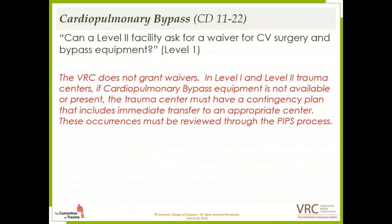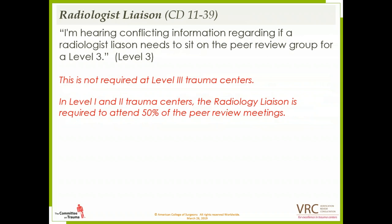On cardiopulmonary bypass: can a level two facility ask for a waiver for CV surgery and bypass equipment? No, the VRC does not grant any waivers for this requirement. The expectation is that in level one and level two trauma centers, if the equipment is not available, the trauma center must have a contingency plan that includes immediate transfer to an appropriate center, and all occurrences must be reviewed through the PIPS process. On radiologist liaisons: is there a requirement for a radiologist liaison to sit in on the peer review group for a level three? There is no requirement for this at level three trauma centers. However, for level one and level two trauma centers, the radiology liaison is required to attend 50 percent of the peer review meetings, per CD 1139.